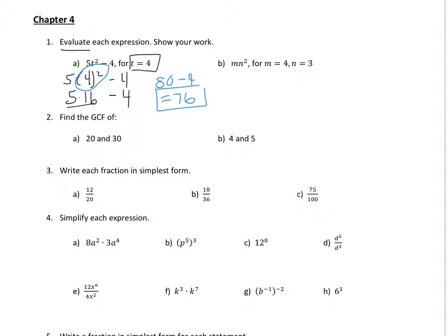And letter B. Mn squared. So 4, oops, that didn't go very well. 4 times 3 squared. So you need, again, you need to do the exponents first. 3 squared is 9. So it's 4 times 9. So 4 times 9 is 36. So once you plug them in, be careful with your order of operations.